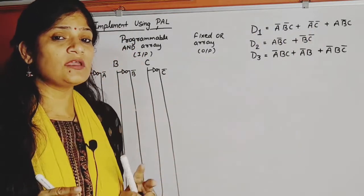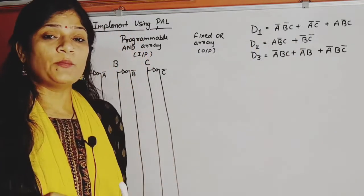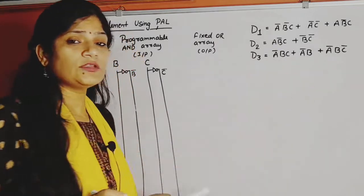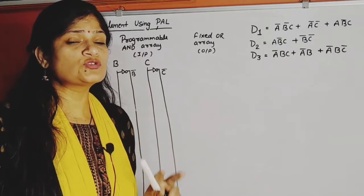So we will use three AND gates - one, two, three. Again three, means for all functions we use three AND gates.